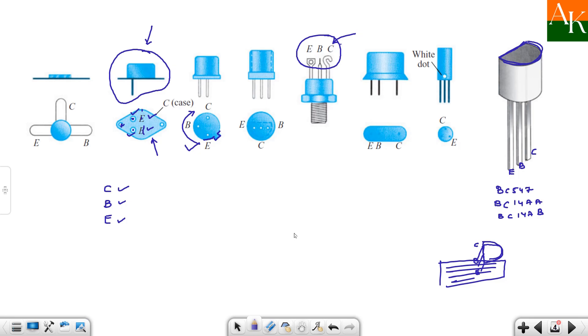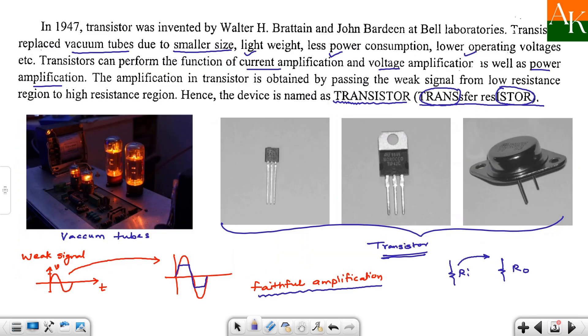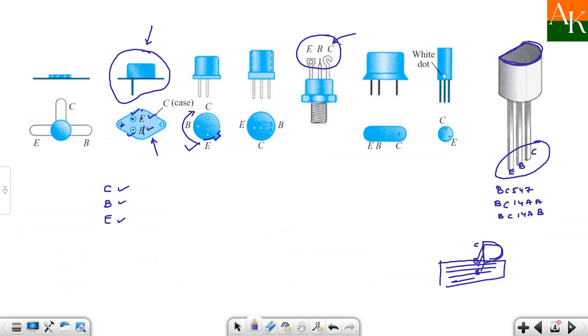So you can remember this thing. Experiment time agar aapko junctions find out karne ke, terminals find out karne ke hai, then you can easily identify using this one. So in this lecture we have covered the inventors of the transistor then the advantages of the transistor and how to identify the terminals. Thank you.